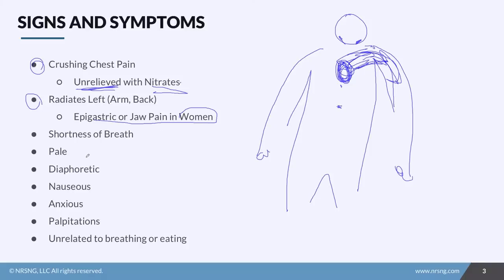Patients will often have shortness of breath. They'll be pale, diaphoretic, nauseous — they're just going to be terrified, very anxious. Imagine having this crushing chest pain that feels like an elephant is sitting on their chest. They're experiencing nausea, anxiety, diaphoresis, pallor, and very significant shortness of breath. Many times they're going to have palpitations as well.